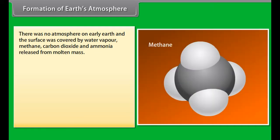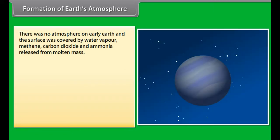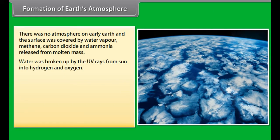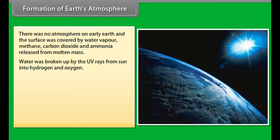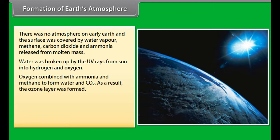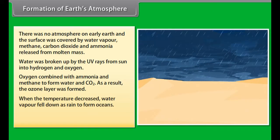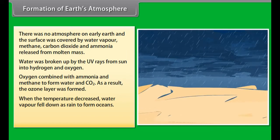There was no atmosphere on early earth. The surface of earth was covered by water vapor, methane, carbon dioxide and ammonia released from molten mass. Water was broken up by the UV rays from sun into hydrogen and oxygen. Oxygen combined with ammonia and methane to form water and CO2. As a result, the ozone layer was formed.